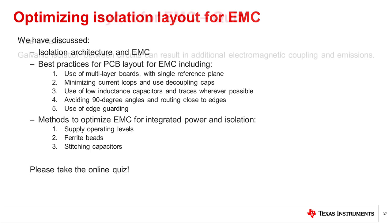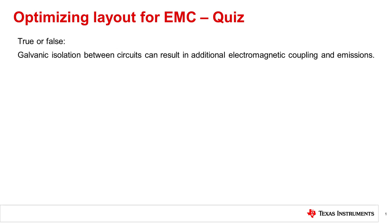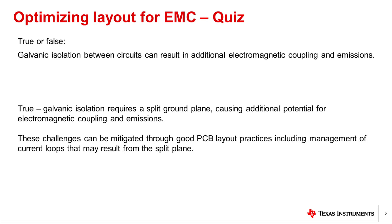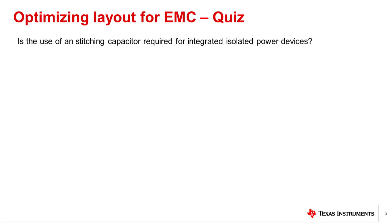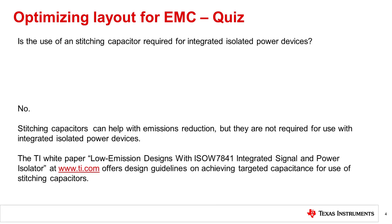True or false? Galvanic isolation between circuits can result in additional electromagnetic coupling and emissions. True. Galvanic isolation does require a split ground plane and separate power supplies in order to maintain a fully isolated design. The challenge of the split ground plane introduces additional potential for electromagnetic coupling and emissions. These challenges can be mitigated through good PCB layout practices, including management of current loops that may result from the split plane. Is the use of a stitching capacitor required for integrated isolated power devices? No. Stitching capacitors can help with emissions reduction, but they are not required. Care must be taken to ensure high-voltage compatibility as well as careful design to maintain creepage and clearance requirements. The white paper 'Low Emissions Designs with ISO W7841 Integrated Signal and Power Isolators' is available at www.ti.com and offers design guidelines on how to achieve targeted capacitance and further design considerations.